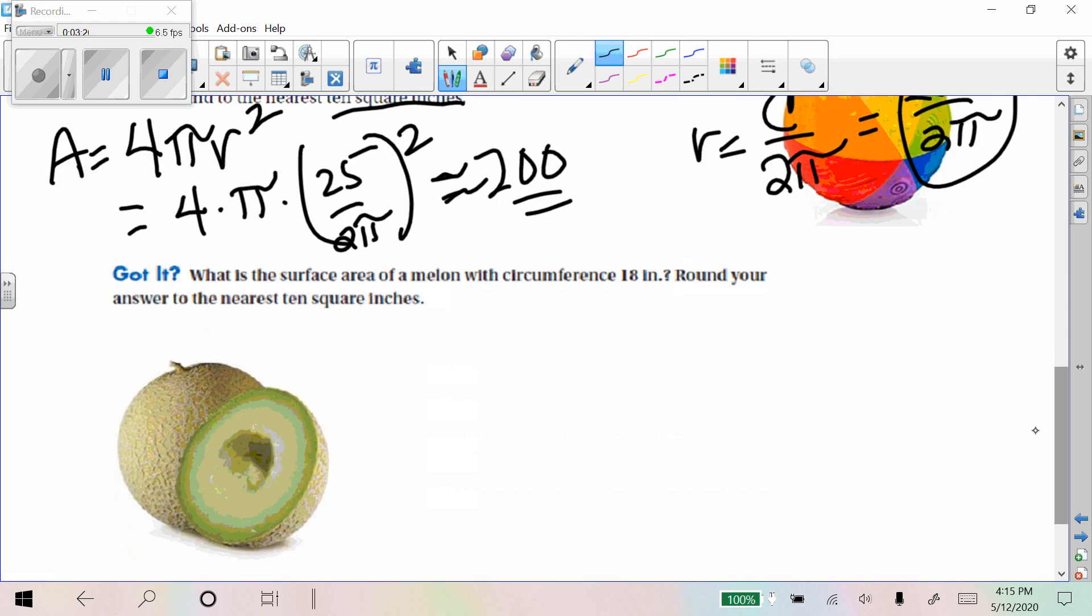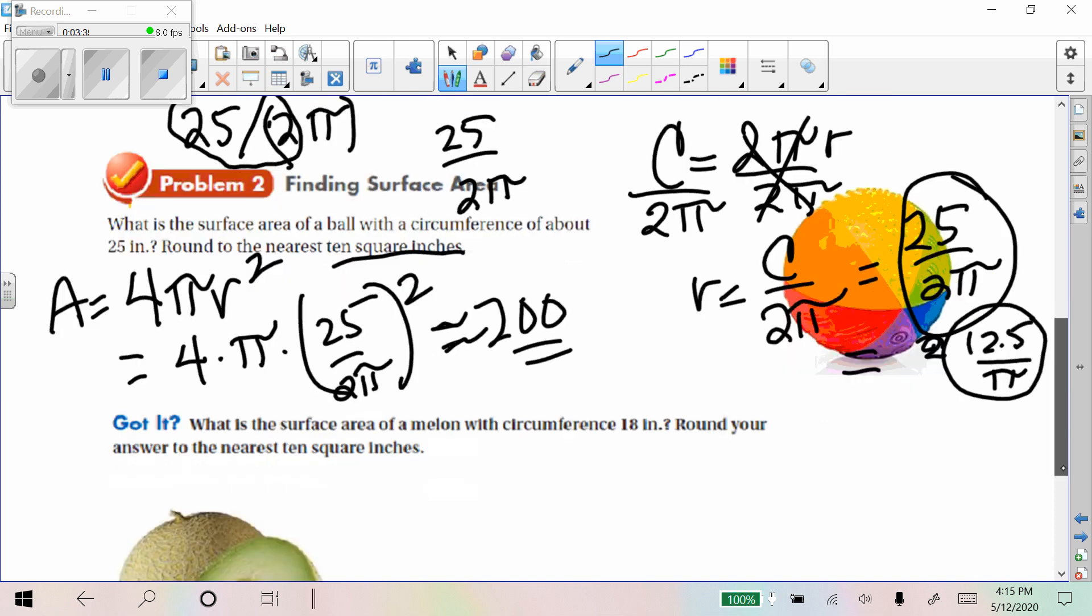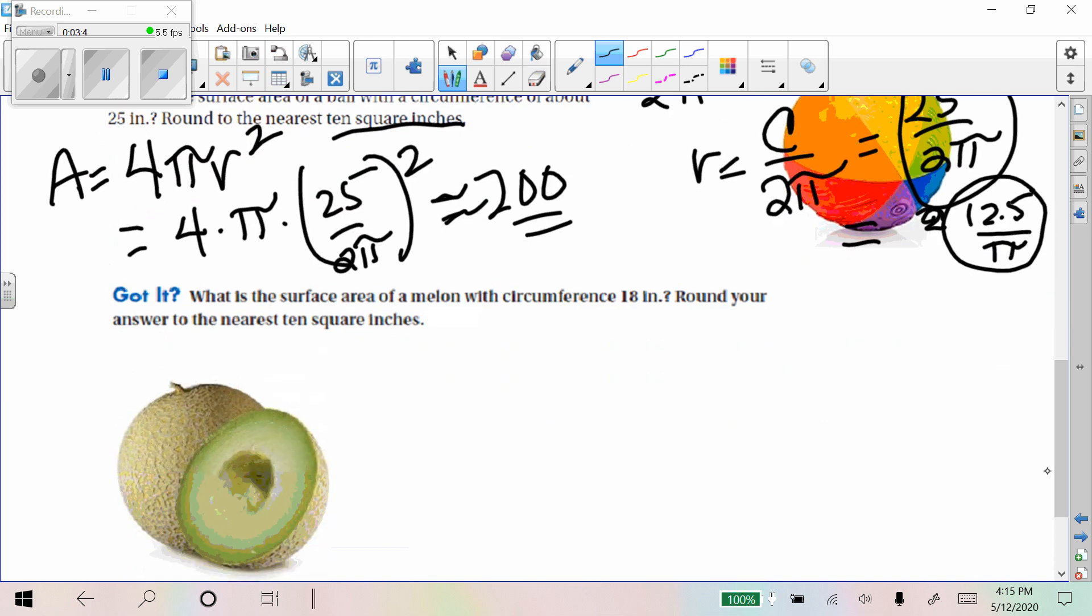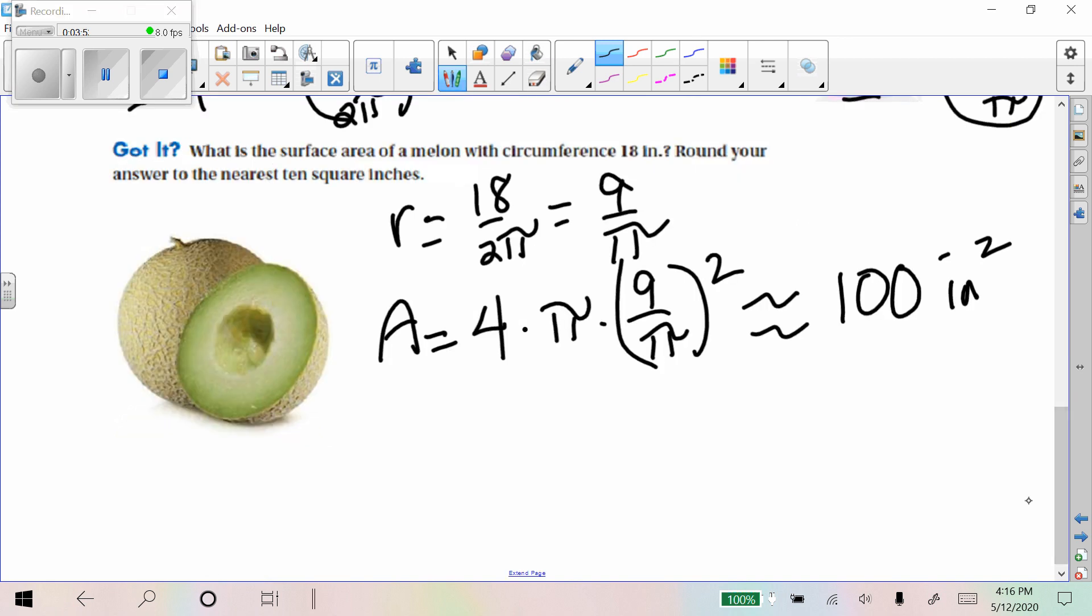All right, so what is the surface area of a melon? Oh, hey, I just thought of another way you can deal with that. If you instead do this as 12.5 over pi, then you don't have to worry about what I was just talking about. So that's probably an easier way to do it. All right, so you give it a shot here. See if you can come up with the right surface area for this melon. Here's what I got. I hope it matches what you got. All right, move it on.